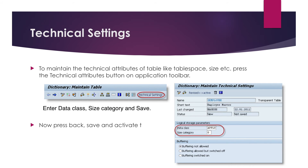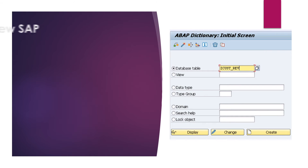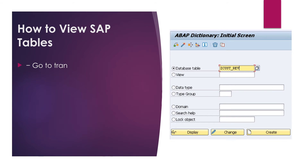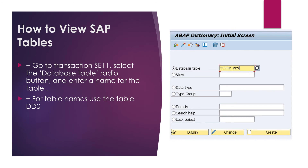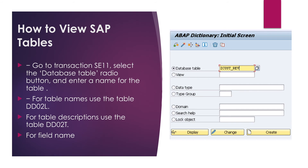Now press back, save, and activate the table. After creating the SAP tables, we have to view how SAP tables are generated. For that, go to transaction SE11, select the database table radio button, and enter the name of the table. To view table names, use the table DD02L. For table descriptions, use DD02T. For table field names, use DD03L and DD03T.